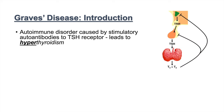As a brief background on normal thyroid function: it all starts in the hypothalamus. The hypothalamus releases TRH, or thyrotropin-releasing hormone, which acts on the anterior pituitary to stimulate the release of TSH. TSH then travels to the thyroid gland to stimulate release of T4 and T3, and those hormones exert negative feedback on the hypothalamus and the anterior pituitary, suppressing both TRH and TSH.